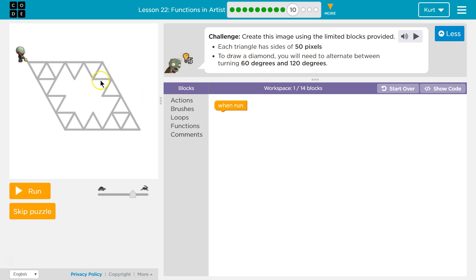To draw a diamond, you will need to alternate between turning 60 degrees and 120 degrees. Okay. So, hmm. Oh, yeah. This looks tricky. So, we're going to want to draw functions to kind of limit how much code we actually have to write.